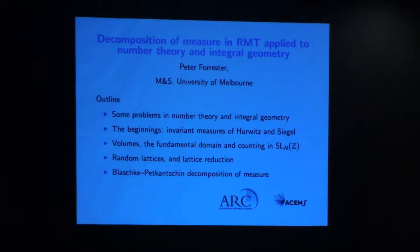The third problem is one of statistical properties of the convex hull. Satya Majumdar has studied convex hulls relating to Brownian motions. What I'd like to talk about is convex hulls — for example, take three points in a disk uniformly, form a triangle, and ask about the statistical distribution of the area of that triangle. How does one perform calculations like that? That would be my last topic if I have time.